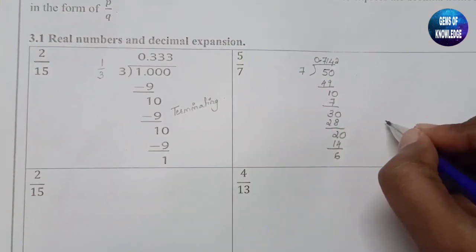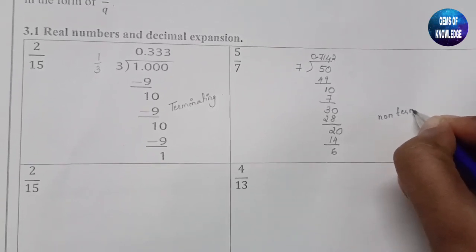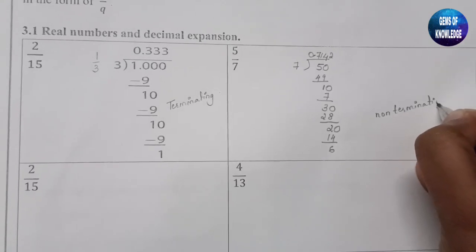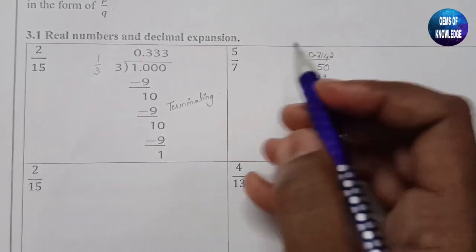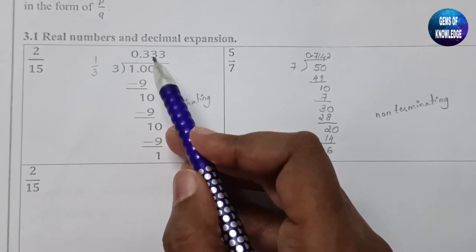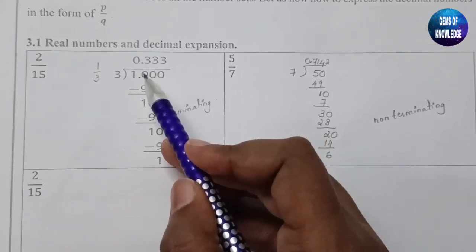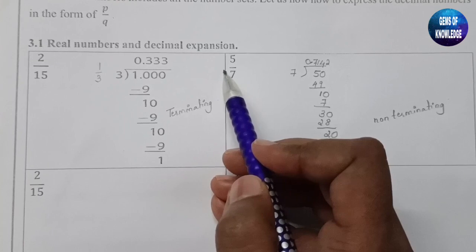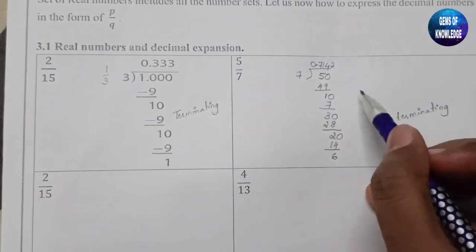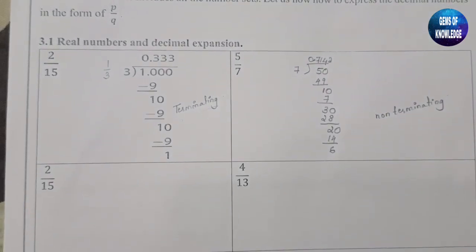This will be asked as non-terminating. Why is this non-terminating while the other was called terminating? You can see 0.3 is going on repeating. If some number is repeated it is called a terminating number, and a number which is not repeating is a non-terminating number.